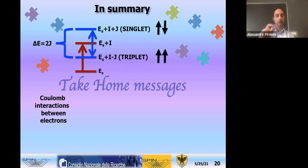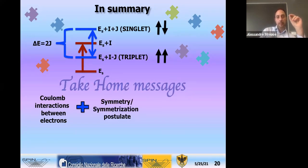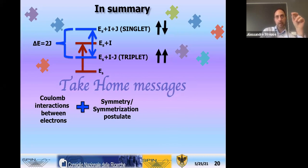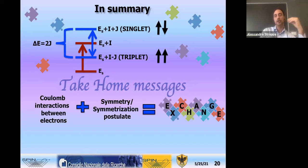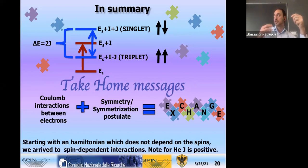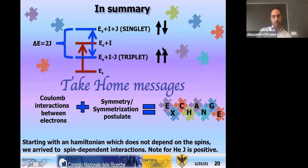The pictorial equation is: Coulomb interaction plus symmetry — meaning the Hamiltonian is symmetric under the permutation group, plus the symmetrization postulate requiring anti-symmetric representations for fermions — gives rise to exchange. Starting with Coulomb interaction with no explicit spin terms, we end up with an energy separation between levels which depends on the relative orientation of the spins.